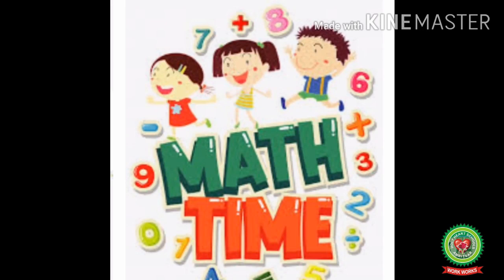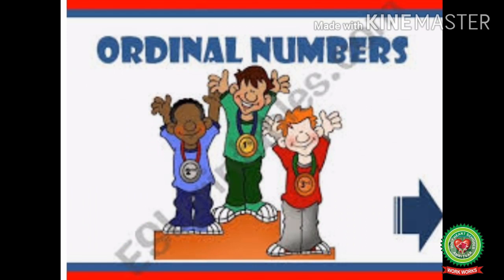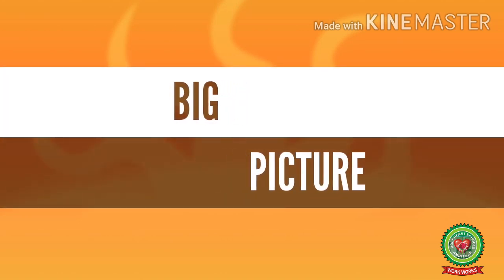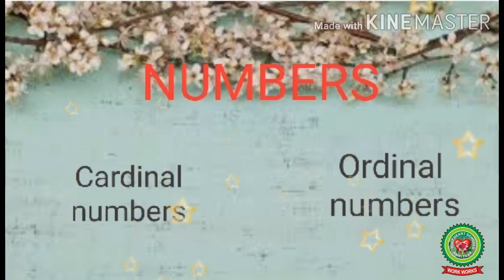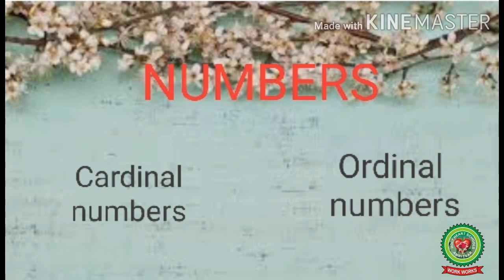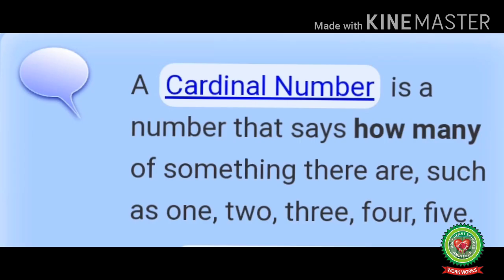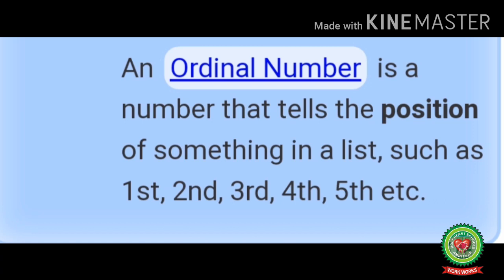Hello kids, welcome to the maths class. Today we will do the topic ordinal numbers. The main objective of today's learning is to understand what ordinal numbers are and how to do them on copy. Numbers are divided into two parts: cardinal numbers and ordinal numbers. A cardinal number says how many of something there are, such as one, two, three, four, five. An ordinal number tells the position of something in a list, such as first, second, third, fourth, fifth.